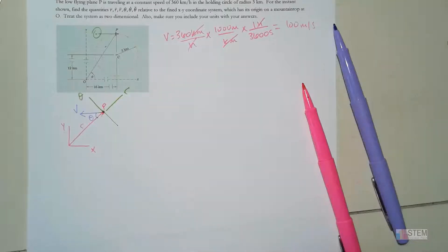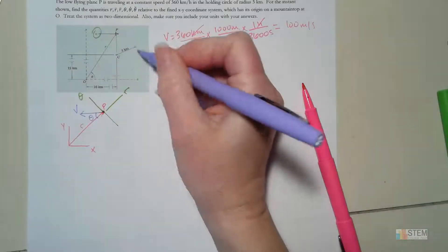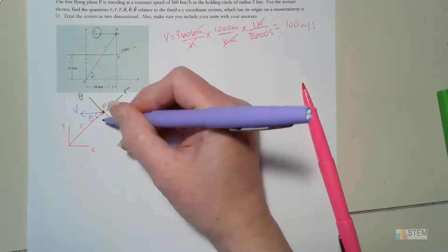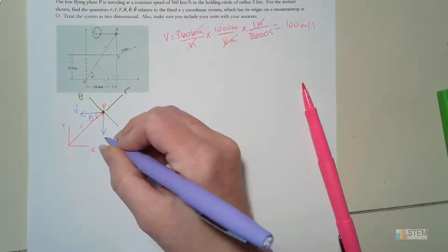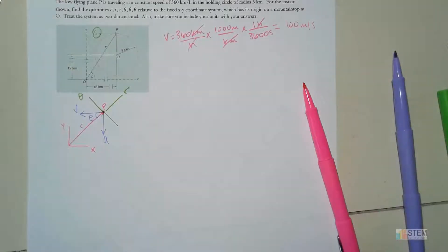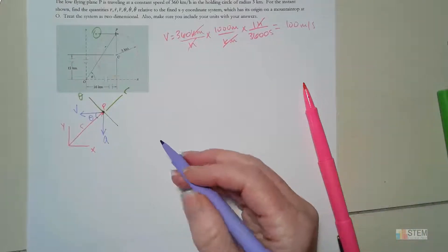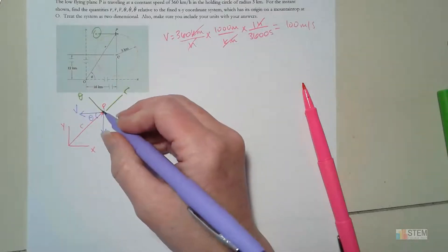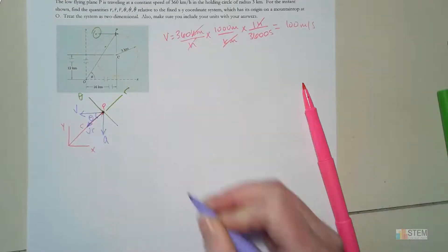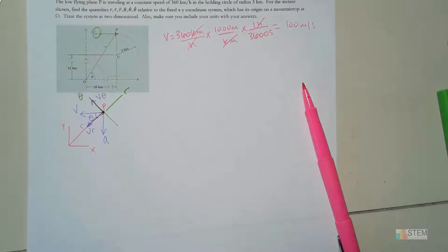Let's also put acceleration on here. We're going around in a perfect circle, so at this point I'll have an acceleration directed toward center C. Let's break this up into components. For V, I'll have a component V_r and a θ component V_θ.